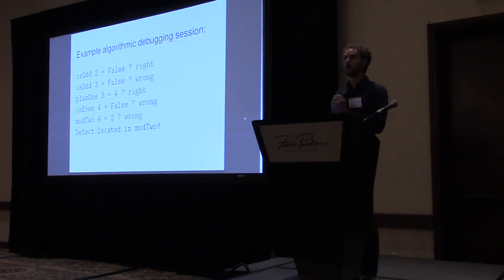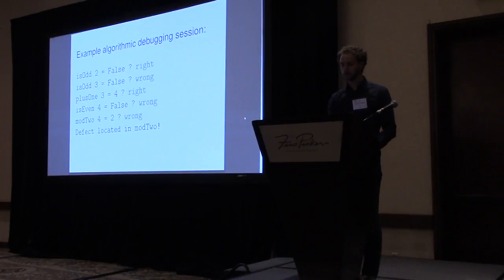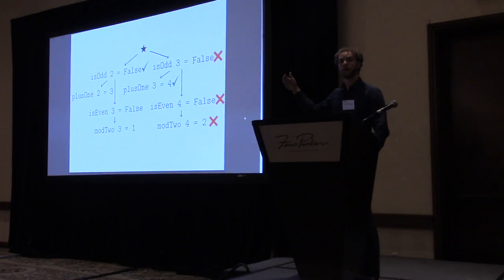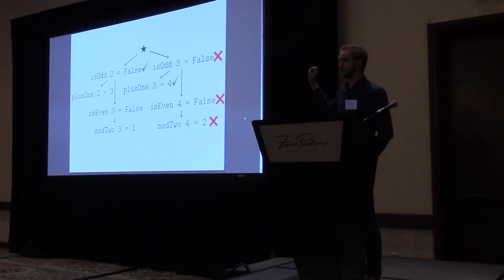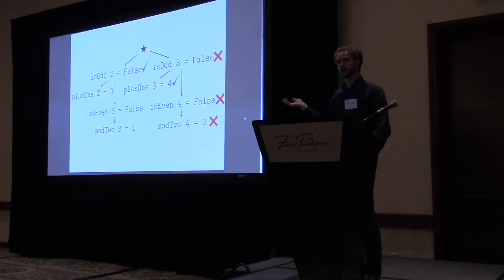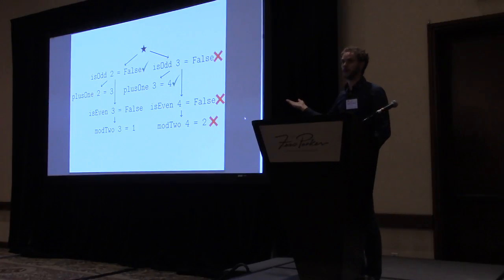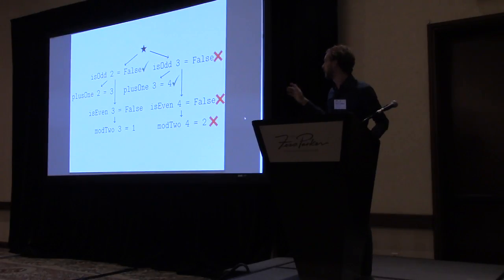How does the algorithm debugger know which questions to ask and which conclusions to draw? For this, it uses something called a computation tree. Here I've shown the computation tree of computing the property with its counterexample. At the top you see the root, and below that you see computation statements — a function applied to an argument and its result. Ticks mean we answered right, and crosses mean we answered wrong. When we find a node in our tree that is wrong and doesn't depend on anything else that is wrong, then the slice of code associated with that node contains the defect.